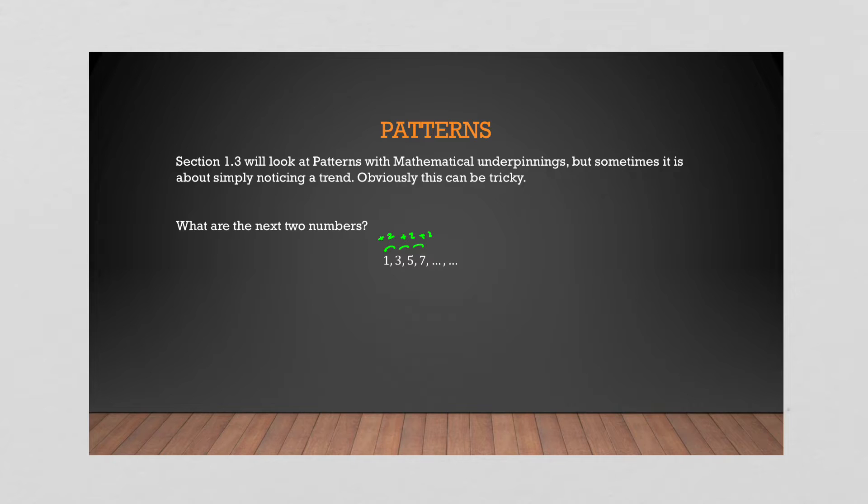My pattern is I add 2 to every number previous. So what's my next two numbers? Well, 7 plus 2 is 9, 9 plus 2 is 11. So that's pretty basic, pretty simple. There's the trend right there. Sometimes the trend can be hidden.